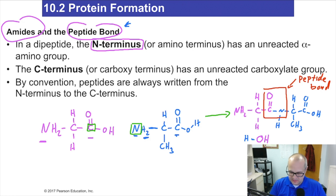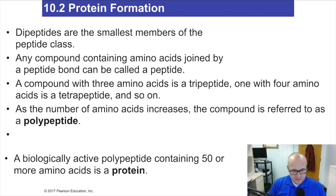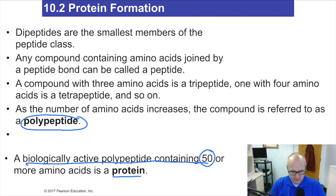Some definitions here: a biologically active polypeptide containing 50 or more amino acids — that's the magic number — is called a protein. If it has 50 or more amino acids, it's a protein. If it has less than that, 49 or fewer, you would call it a polypeptide or simply a peptide.